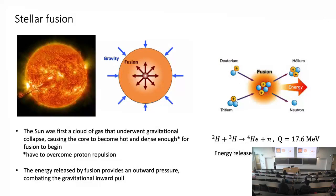Stellar fusion is a process by which you have a cloud of gas — we've got a bunch of hydrogen and helium out there already from the Big Bang. That's how our sun started: a big cloud of gas that starts to collect and undergo gravitational collapse. At some point it becomes hot and dense enough that nuclear fusion turns on and pushes back, emitting energy corresponding to an outward pressure that keeps the star from collapsing. You have to get hot and dense enough to overcome proton repulsion.